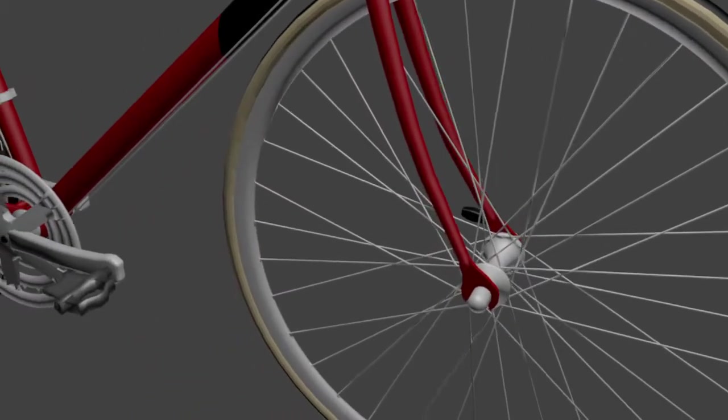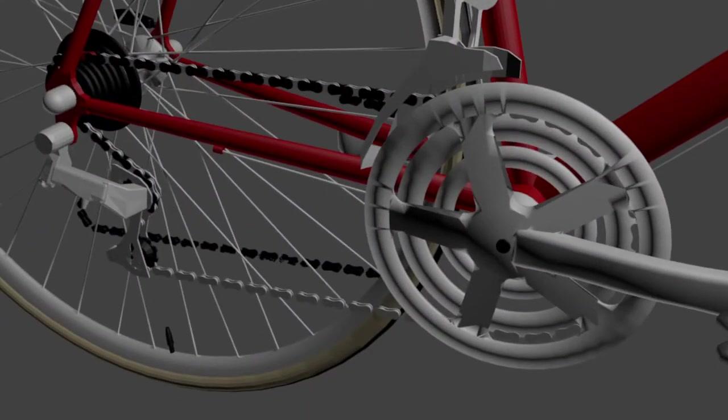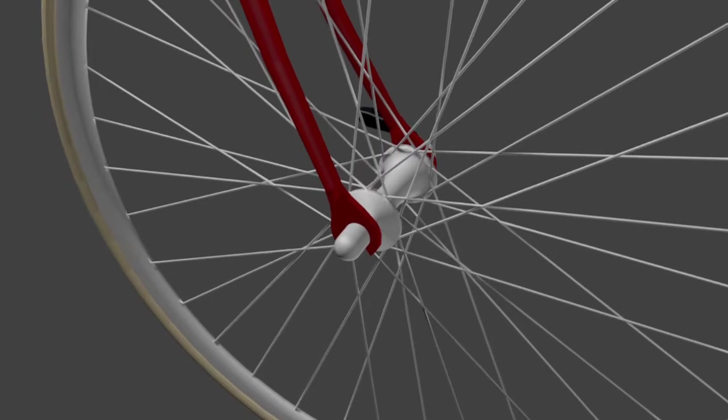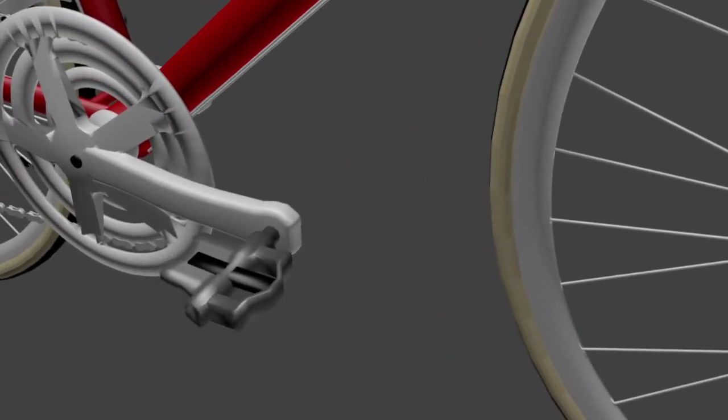Ball bearings, located in the bottom bracket and wheels, are the next step along the transmission power line. Ball bearings are used where one part of the system is static, i.e. the wheel axle relative to the hub shell, and the bottom bracket shell relative to the crankset axle.